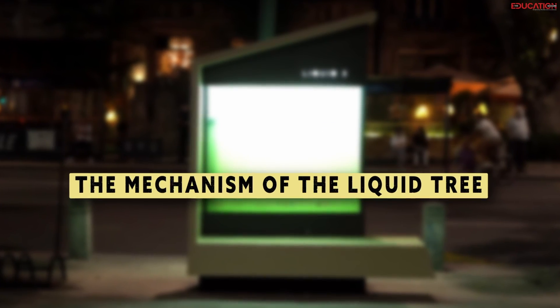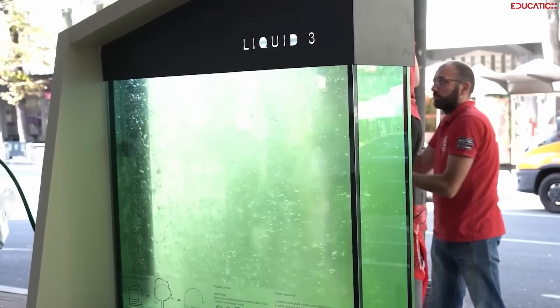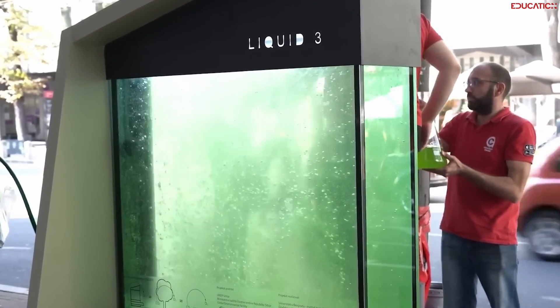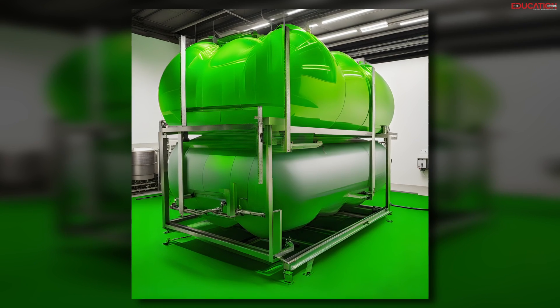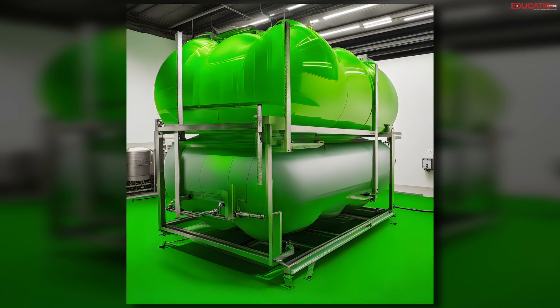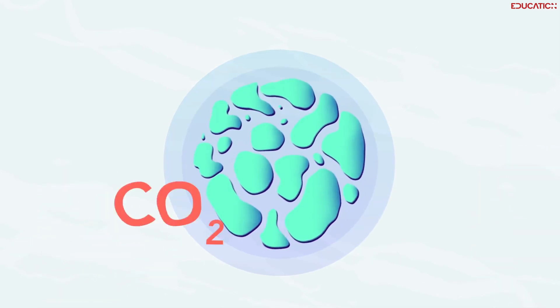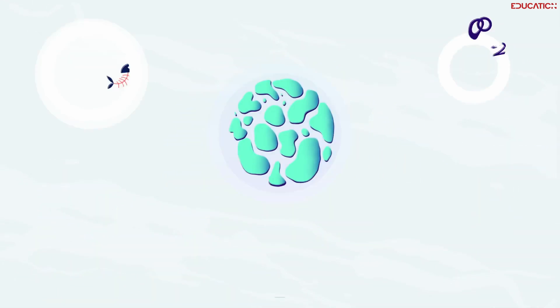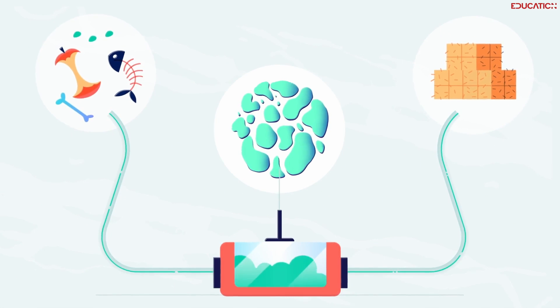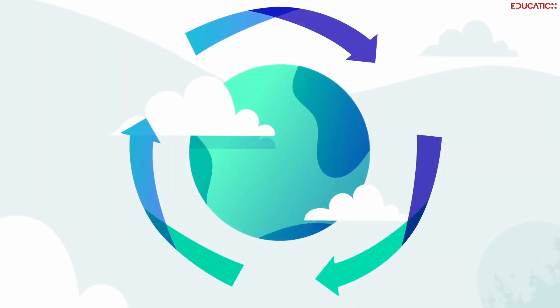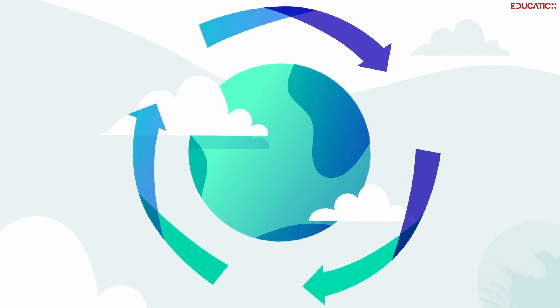Now that you understand the fundamental structure of the liquid tree, let's delve into a more detailed explanation of its operation. To begin, contaminated air enters a water tank containing microalgae. Subsequently, these microalgae harness sunlight to transform carbon dioxide and various air pollutants into both oxygen and biomass. Once the newly generated oxygen is released, the residual biomass can be repurposed for the production of alternative biofuels and various other products.